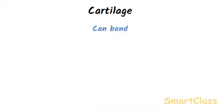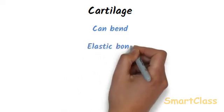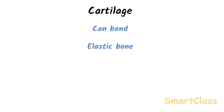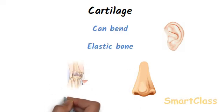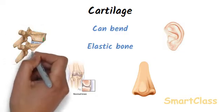Most of the skeleton consists of hard bones; however, at some places there is a material which is not as hard as bones and which can be bent — it is called cartilage. Cartilage is much softer than bone; it can be bent without breaking. It is a kind of softer and elastic bone. Cartilage is present in the pinnae of the ears, at the end of the nose, on the ends of bones where they meet at a joint, and between the vertebrae of the backbone.